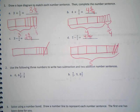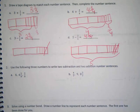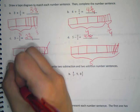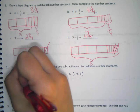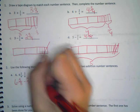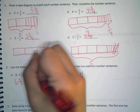All right, for number two, it says use the following three numbers to write two subtraction and two addition number sentences. All right. Who can give me one for A, subtraction or addition? Josiah? Six plus three-eighths equals six and three-eighths.